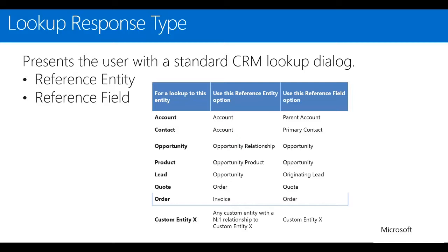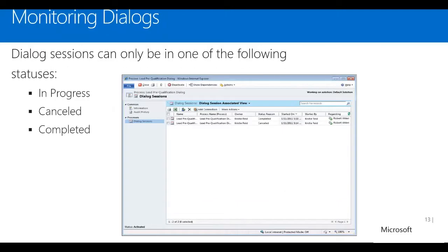Common scenarios for lookup entities include: for account, use account with the parent account lookup; for opportunity, use the opportunity relationship entity and the opportunity field. As far as monitoring dialogues, similar to workflows, once a dialogue runs on a record you can see the dialogue session right from within that record. You can view all dialogues that have run and see what responses were stored, including what the end user typed in during a Query CRM Data step.